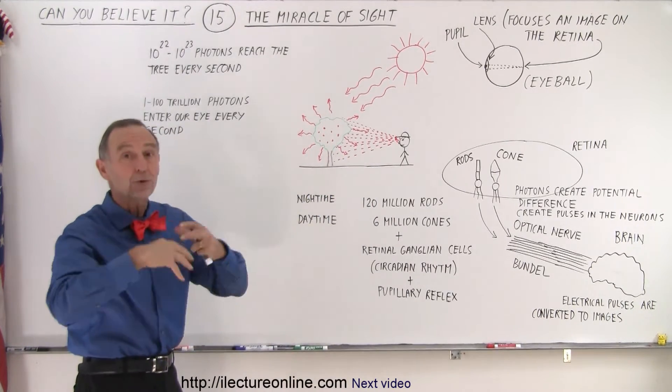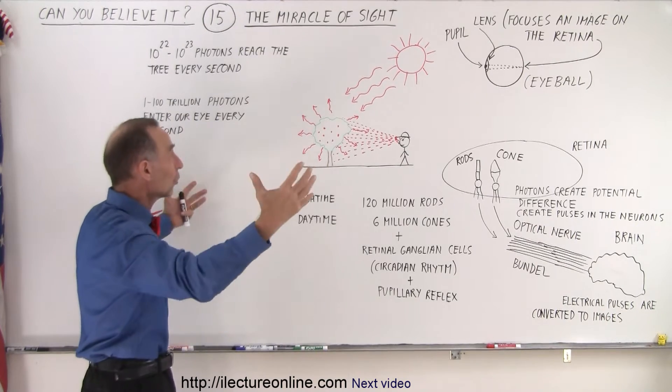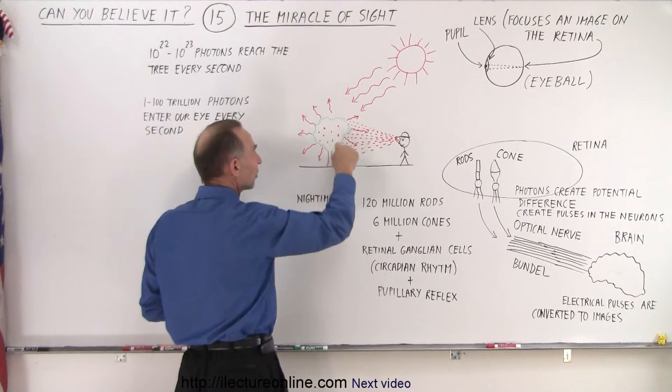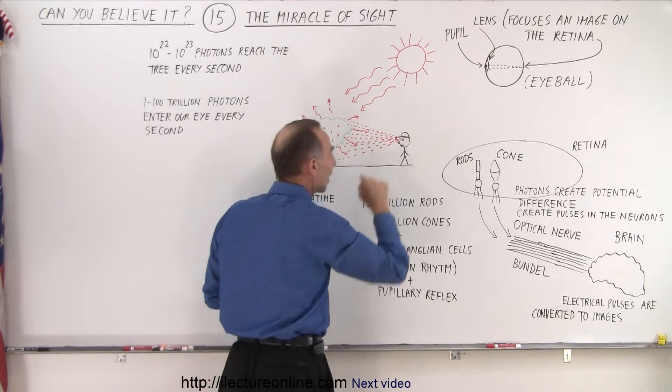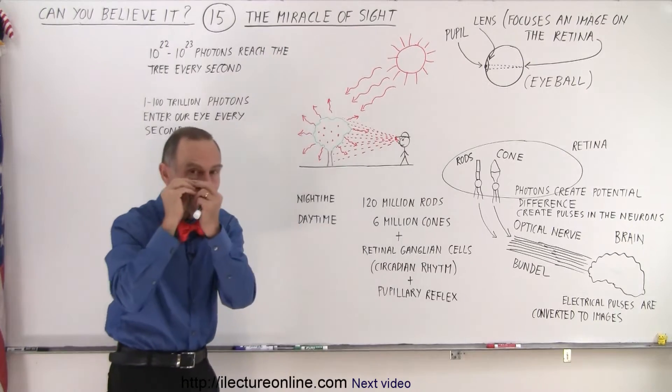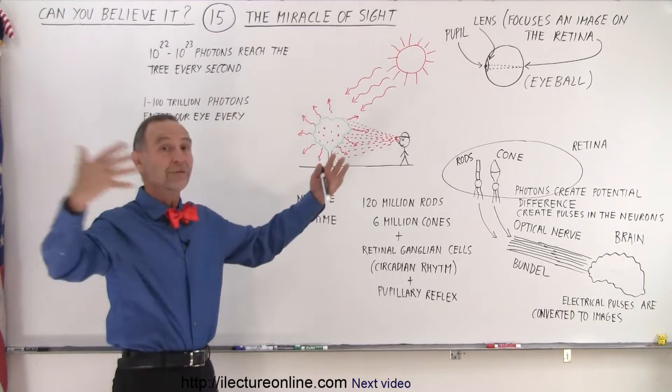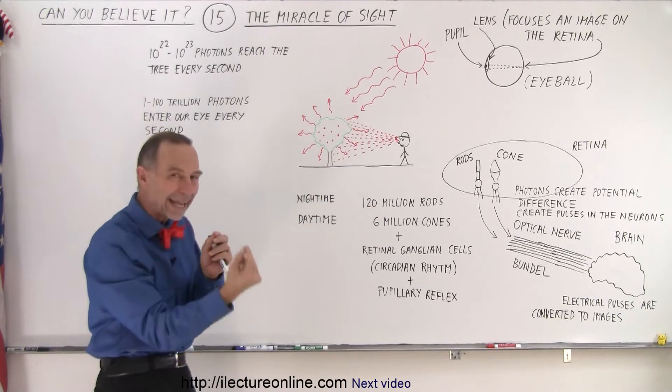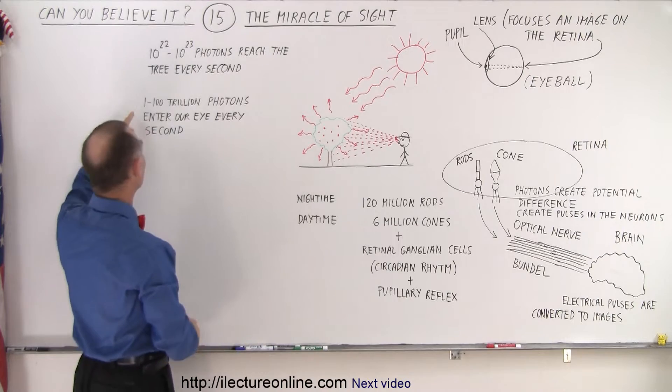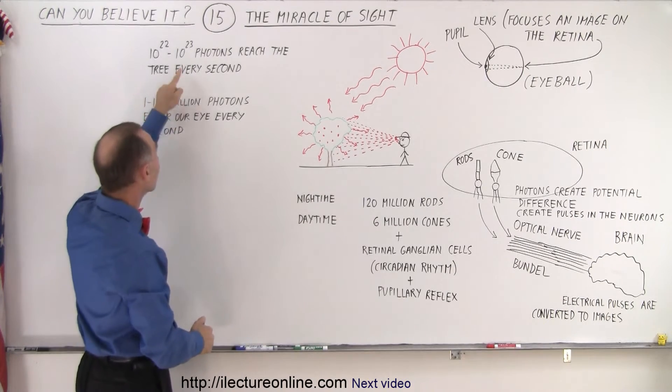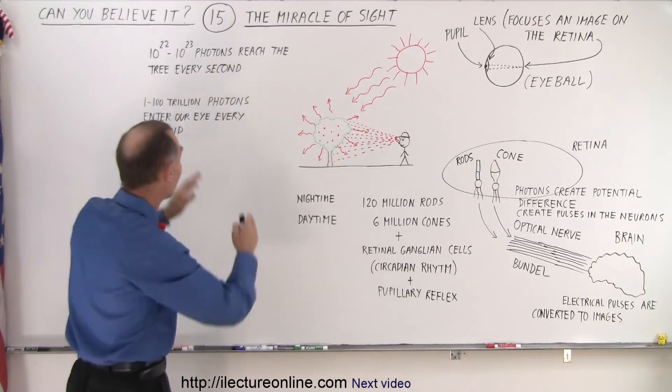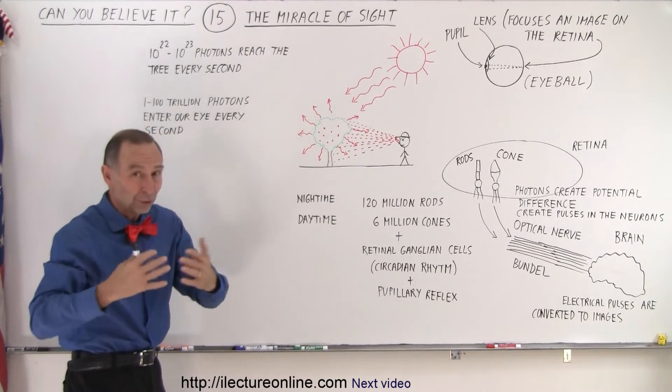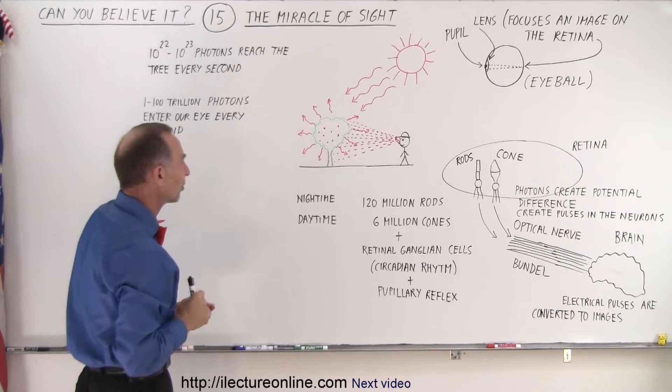Those photons either get absorbed to a large extent, but also get scattered in all directions. Of those photons that are scattered from the various parts of the tree in the direction of our eyeball, when it enters the eye, that's when we can actually see the tree. Only those that enter our eye. Approximately anywhere from 1 to 100 trillion of those photons enter our eye every second.